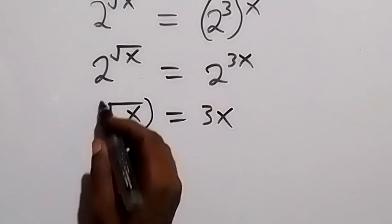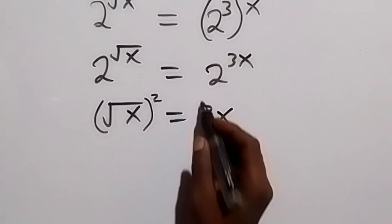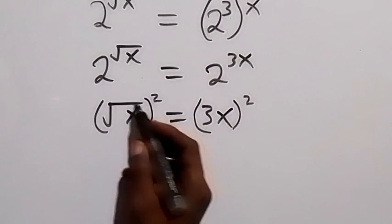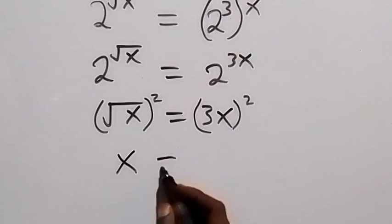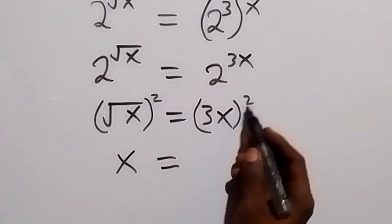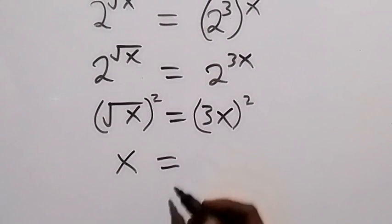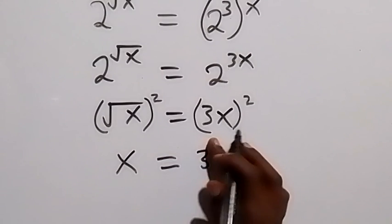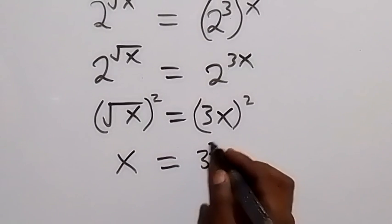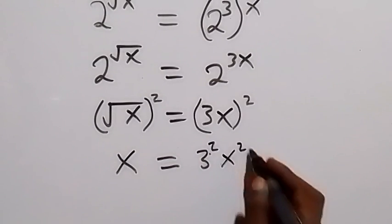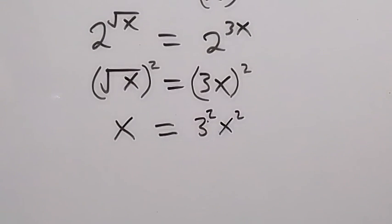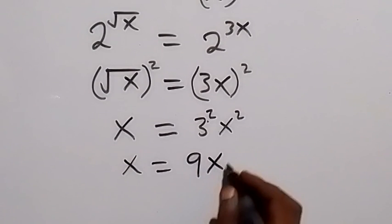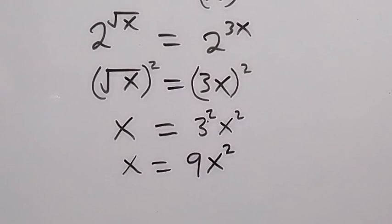Then we can take the square on both sides. We square this side, then we square this side. The square here will cancel square root, then we are left with x which is equal to... here this square will affect 3 and affect x, so we have 3 square then x square. And 3 square is 9, so we can see x equals to 9 times x square.